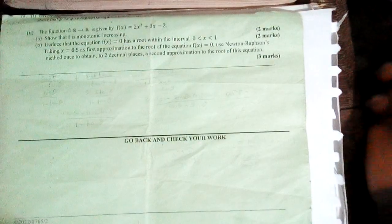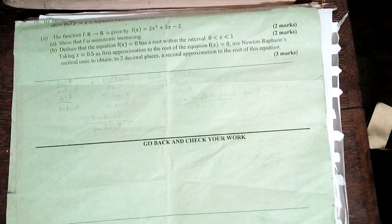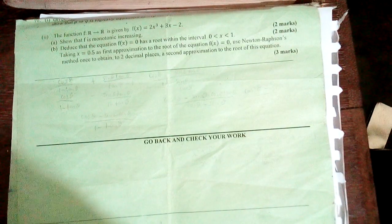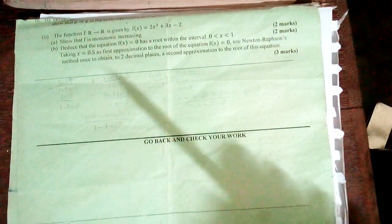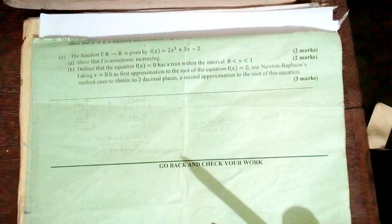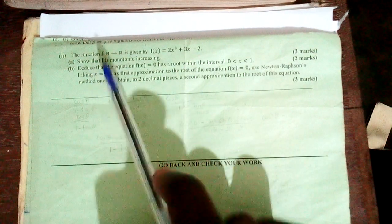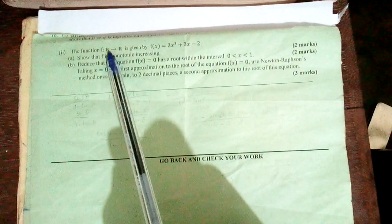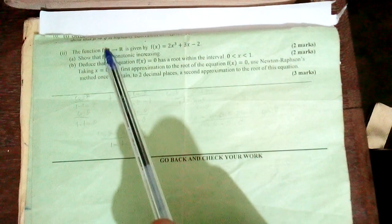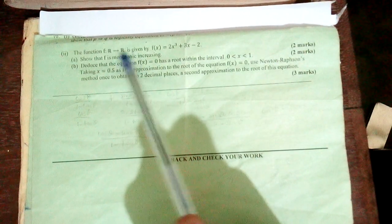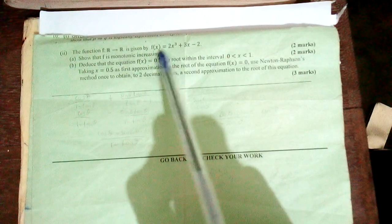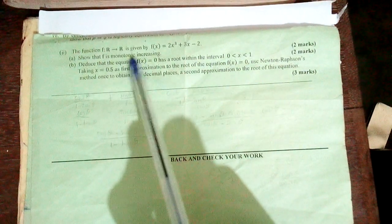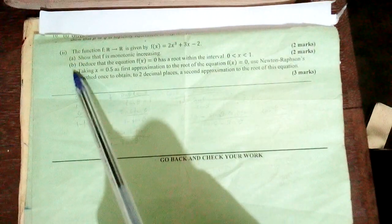Hello everyone. In this video we are going to be looking at June 2022 Math Paper 2, question number 10. We are solving an equation where a function f is defined from R to R, meaning R is the domain and R is the co-domain, given by a cubic equation. Part one asks to show that f is monotonic increasing, and part two asks to deduce that the equation f(x) = 0 has a root within a given interval.